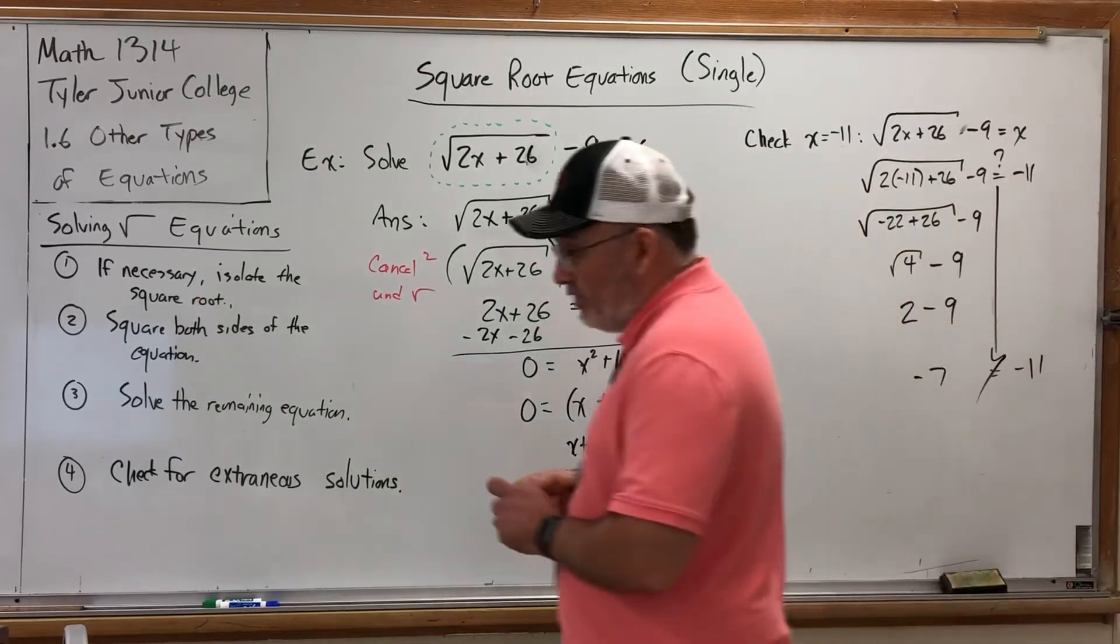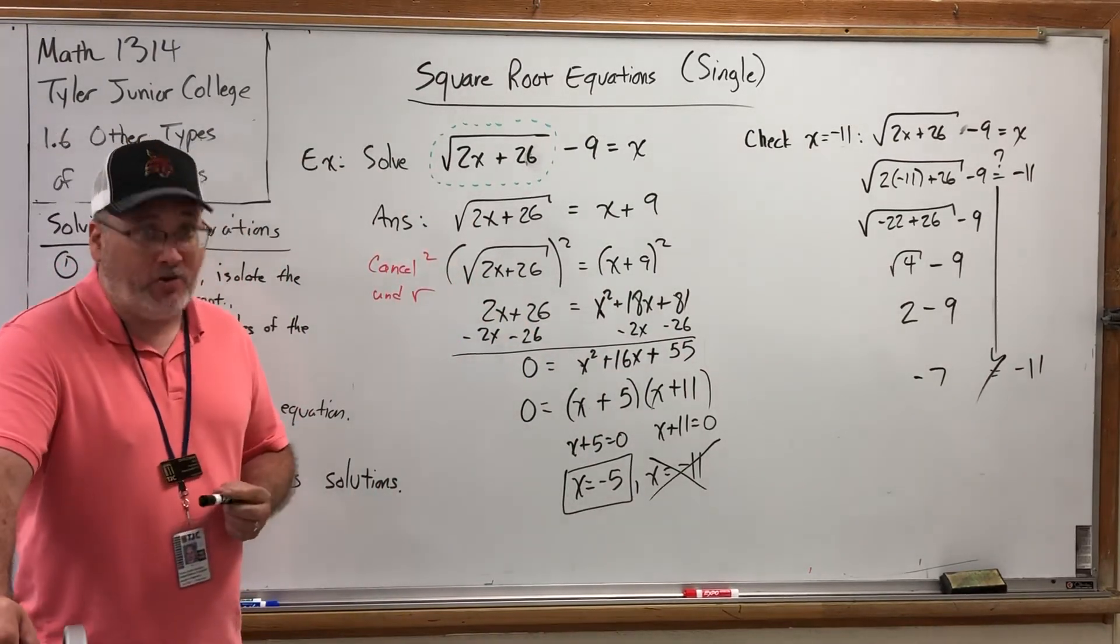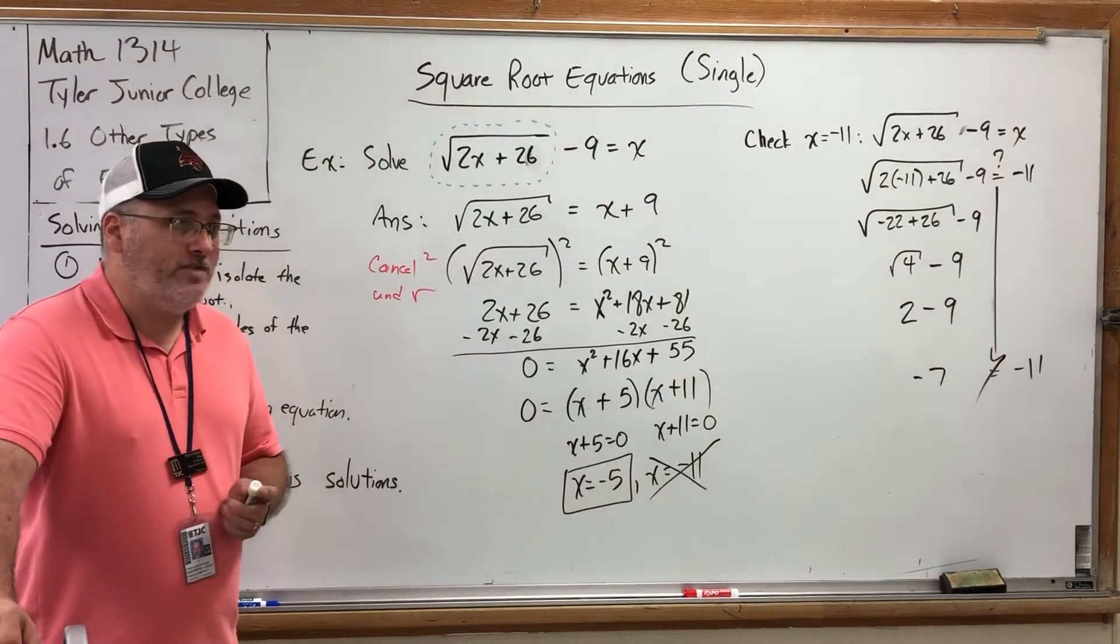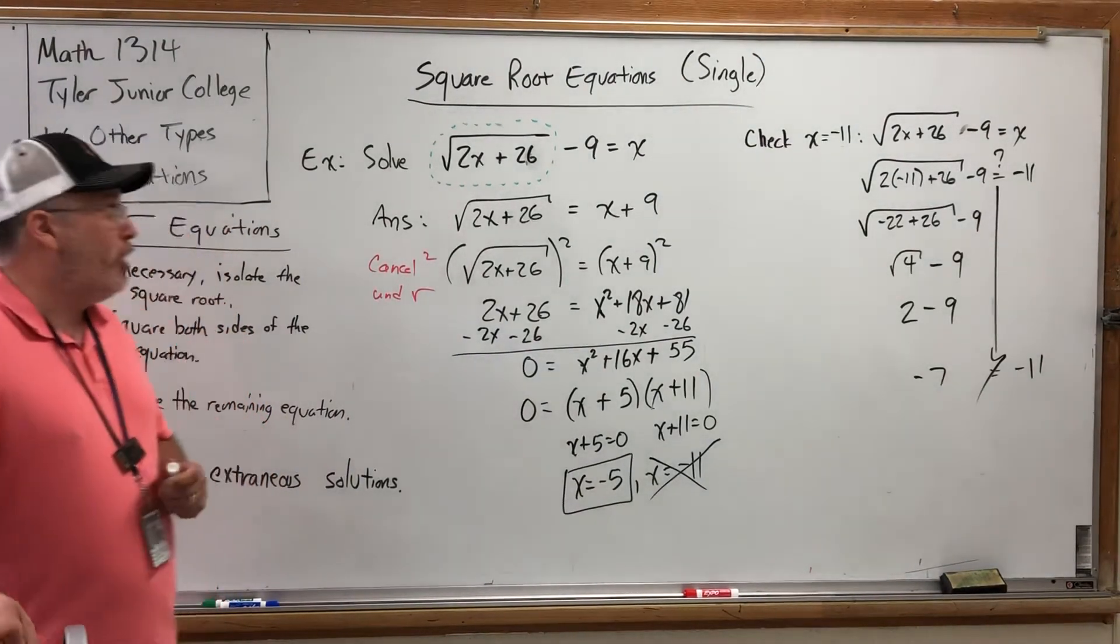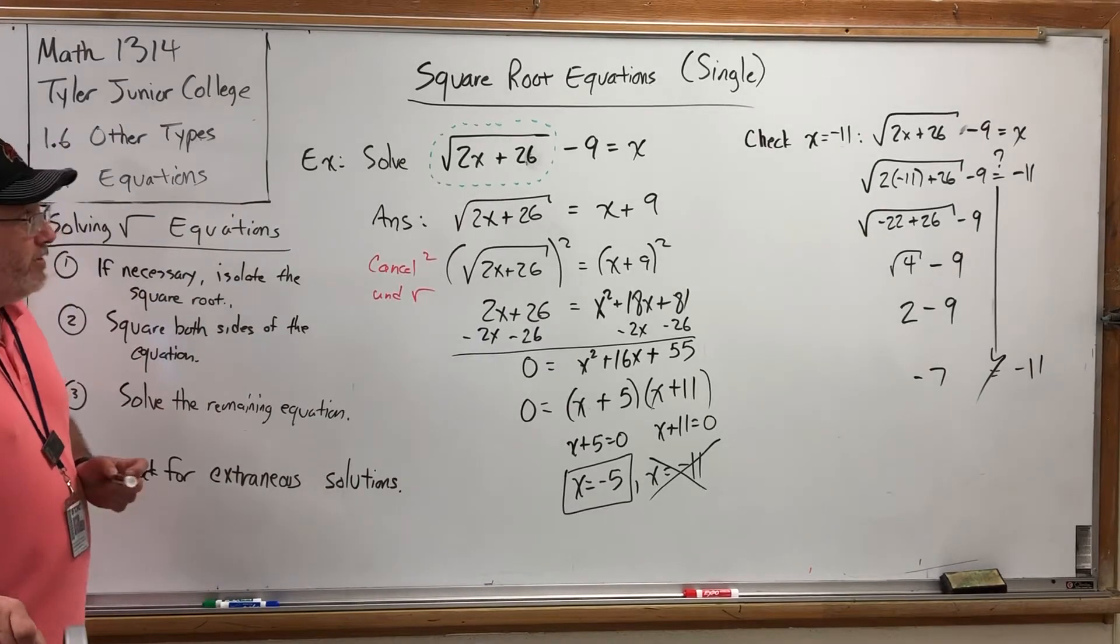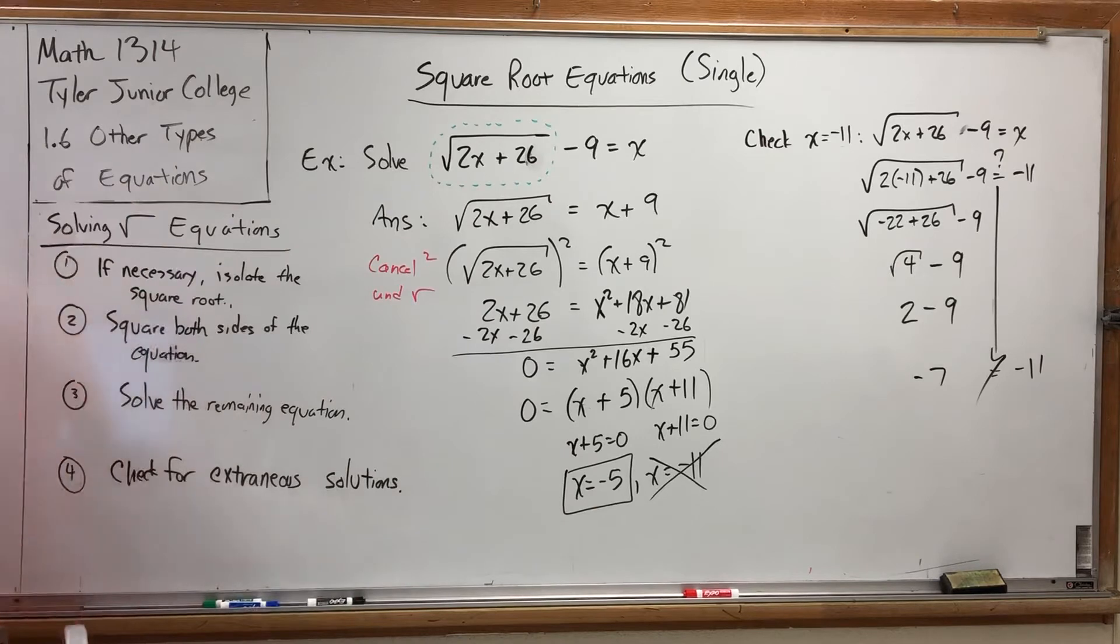So if this were a question in a homework platform, typing in both negative 5 and negative 11 would be incorrect. It might give you a warning that make sure you check your answers, but that's just part and parcel of solving square root equations is checking the solutions. But I also want to mention why such bad answers, or why a bad answer like negative 11 snuck in.